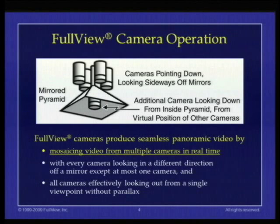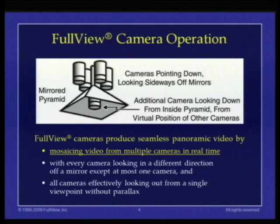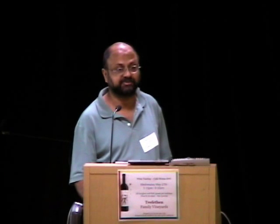The basic camera operation is shown in the next slide. You have a bunch of flat mirrors — not curved — and one camera is looking off each mirror, except one camera need not be looking off any mirror. The key is that the images are not blended, they are mosaiced. There's no blending at all, and yet the seams where images from different cameras come together are typically not noticeable and definitely not distracting. We are able to mosaic these images because all cameras are looking out from a single viewpoint — so there's almost no parallax.